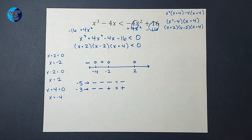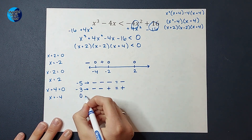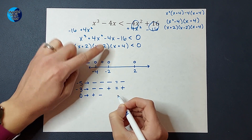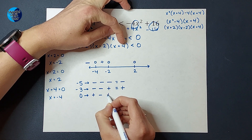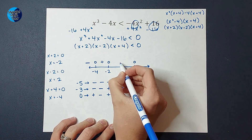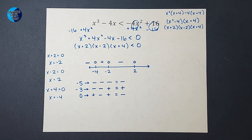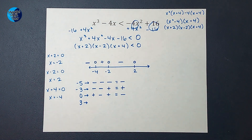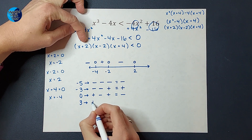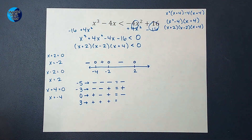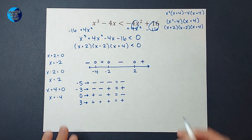Now let's plug in a number between negative 2 and 2 — I'll plug in 0. Zero plus 2 is positive, 0 minus 2 is negative, and 0 plus 4 is positive. Positive times negative gives negative, negative times positive gives negative. You might notice it's a pattern — that doesn't happen with every problem, but it does happen often. Next, let's plug in a number bigger than 2 — let's use 3. Three plus 2 is positive, 3 minus 2 is positive, and 3 plus 4 is positive. Positive times positive times positive gives positive.